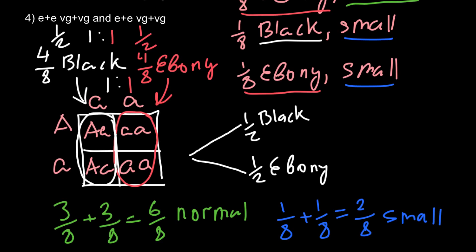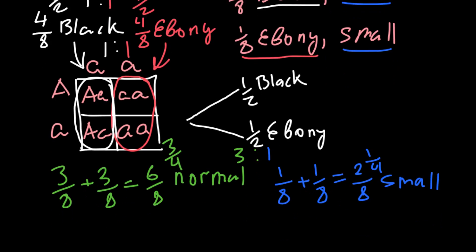So 2/8 equals 1/4 small wings, and 6/8 equals 3/4 normal wings. If we simplify, the ratio is 3 to 1. I hope you can recognize this ratio from simple Mendelian genetics — we can get such a ratio when both parents are heterozygous.